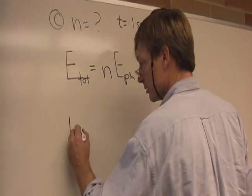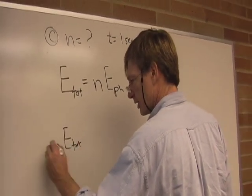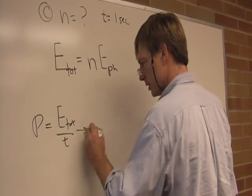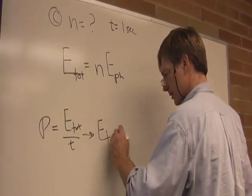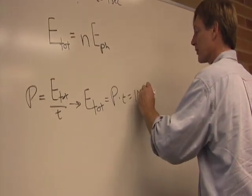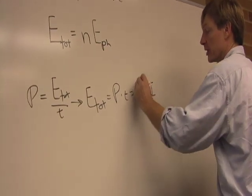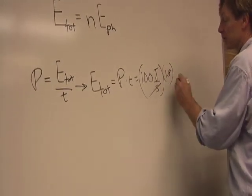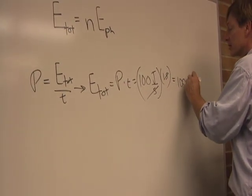Now the total energy, let's see, the total power of the bulb is equal to the energy over the time. So the total energy is equal to the power of the bulb times the time, which is 100 watts. I'm going to say joules per second, same thing, times one second. By saying joules per second, I can get my units to cancel. So I'm putting out 100 joules each second.